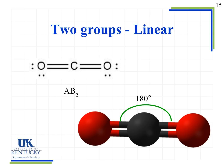Our first example is fairly simple — two groups around the central atom. Here in the middle, this is our carbon, which is the central atom, and we see there are two groups attached to it — the oxygens. The way these two groups can get as far apart as possible is to be 180 degrees from one another. So when we have one central atom (A) and two bonding groups (B2), we call that a linear geometry.